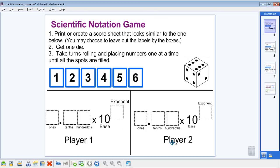Next, you'll need one die. Take turns rolling and placing numbers one at a time until all the spots are filled. Let's say player one goes first and rolls a three. That player may decide to put that in the tenths place.